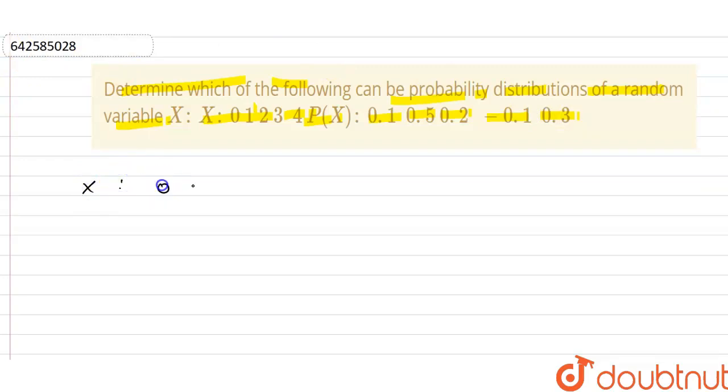X is 0, 1, 2, 3, 4 and probabilities of these are 0.1, 0.5, 0.2, minus 0.1, and 0.3. So this is in the tabular form.